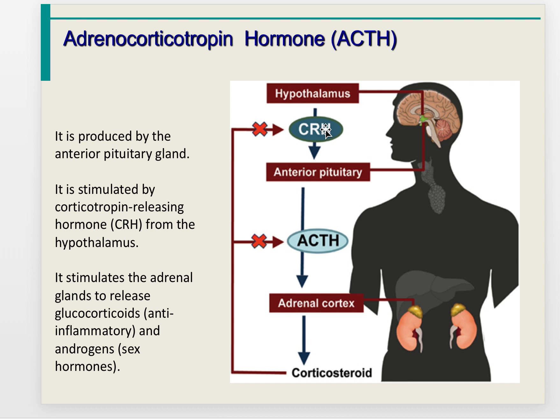Adrenocorticotropic hormone, ACTH, is produced by the anterior pituitary gland and is stimulated by corticotropin-releasing hormone, CRH, from the hypothalamus. There is a pattern: anterior pituitary hormones are stimulated by hormones from the hypothalamus, making the hypothalamus the ultimate controller of hormone release. The hypothalamus releases CRH, causing the pituitary to release ACTH, which then causes the adrenal glands to release glucocorticoids and androgens.